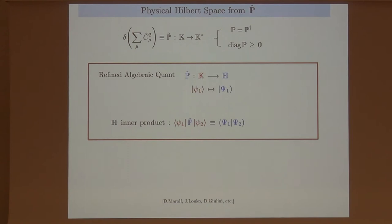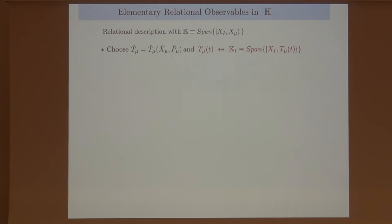And further, the crucial thing here is that the rigging map elements between two kinematic states, psi one and psi two, is then defined as the physical inner product between the corresponding physical states. So this is the physical Hilbert space we are going to build our observables in. And here from this, the form of the inner product, it is already suggested that if we find physical observables in the physical Hilbert space, then the propagation described by such observables will be in the form of physical inner product in physical Hilbert space.